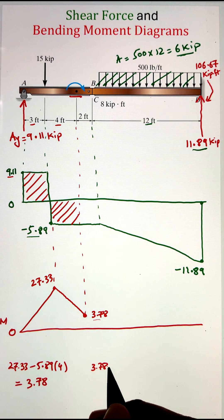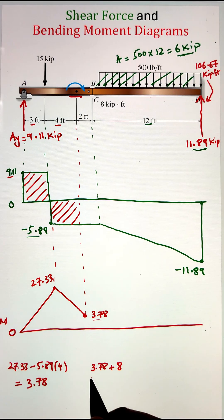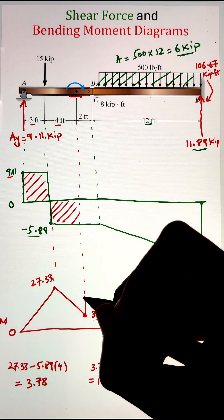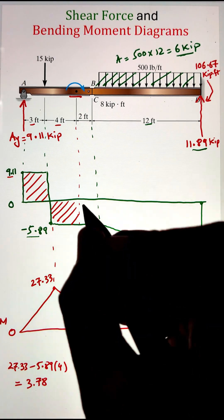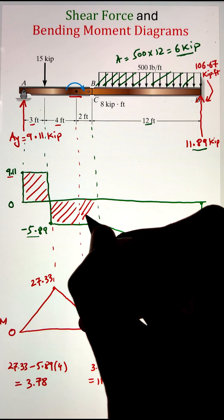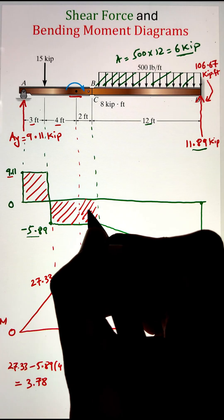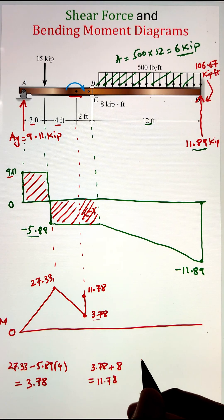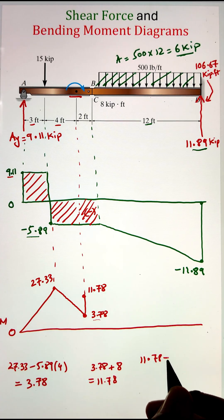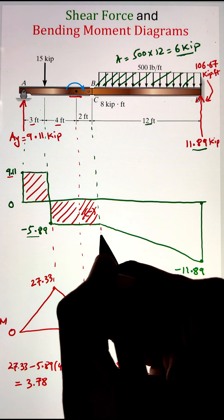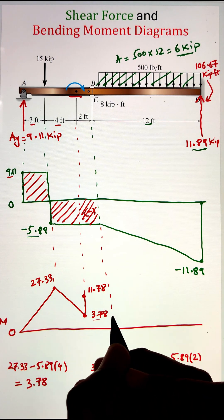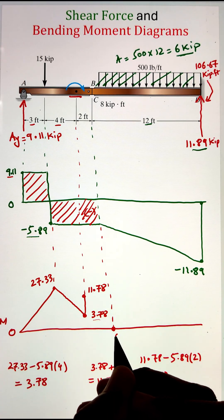After that, we have the couple moment of 8 kilopound-feet acting in the clockwise direction. Whenever a clockwise couple moment is applied, there is a jump up on the bending moment diagram. So the value jumps from 3.78 plus 8, giving 11.78 kilopound-feet. The small rectangular area from the couple moment to point C is negative 5.89 times 2, and subtracting that from 11.78 gives zero — so the bending moment decreases linearly from 11.78 to 0 at point C.